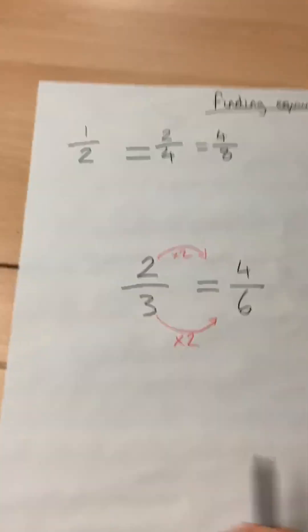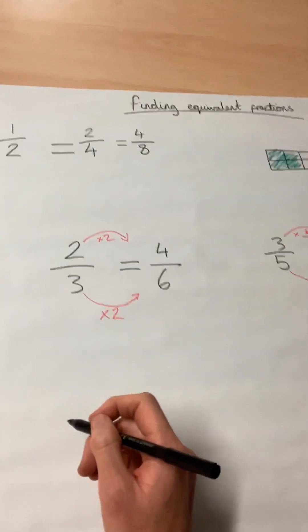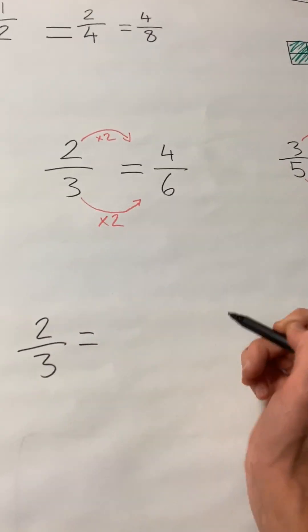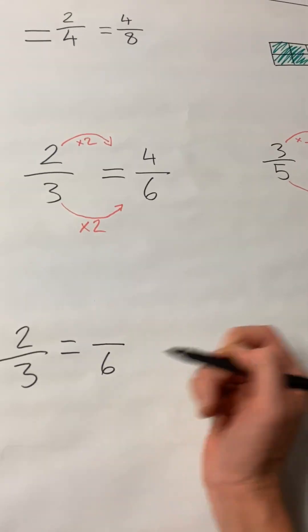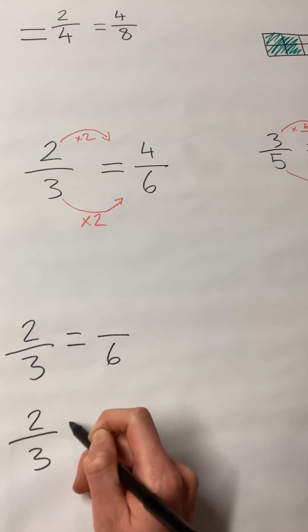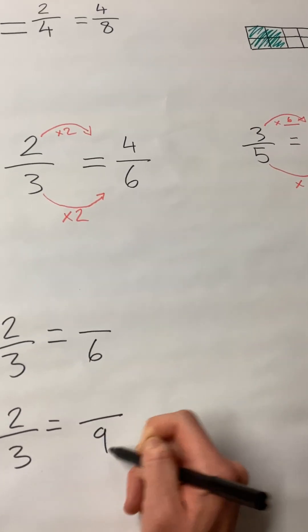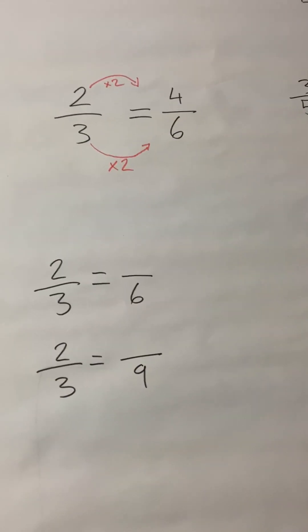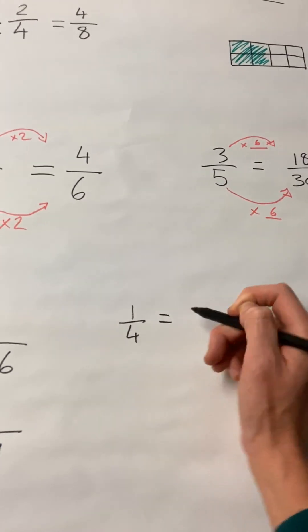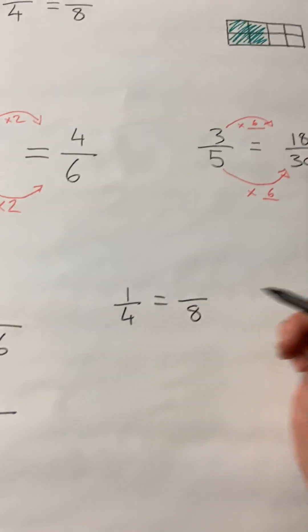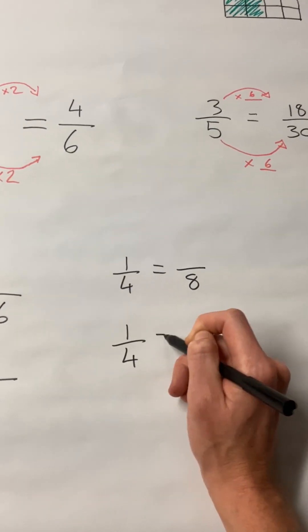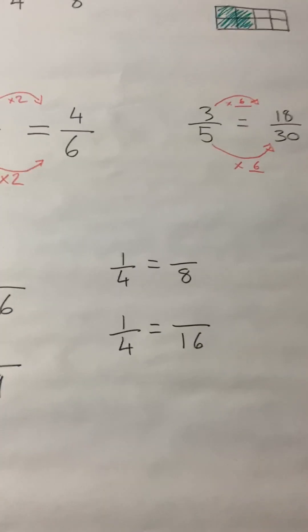Can you try that out with some of these? Two thirds is equivalent to how many sixths? Two thirds is equivalent to how many ninths? One quarter is equivalent to how many eighths? One quarter is equivalent to how many sixteenths?